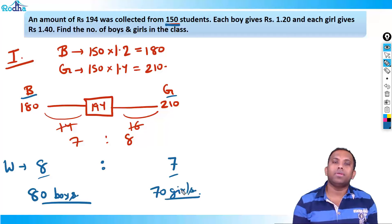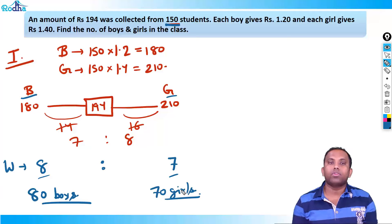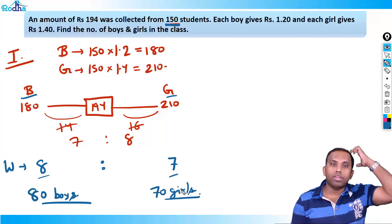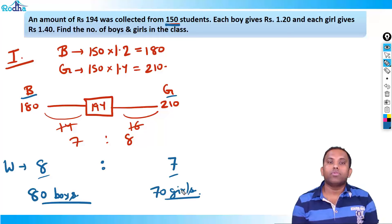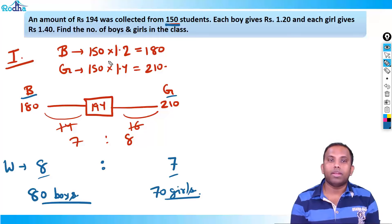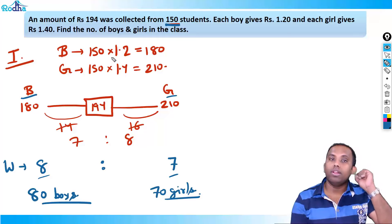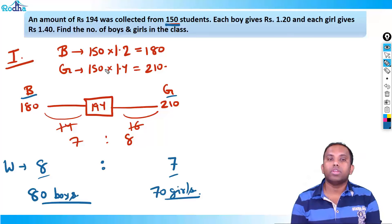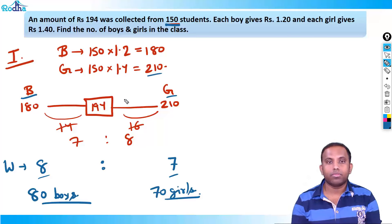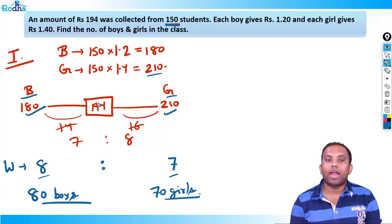That's the answer — a very easy and fast method. To recap: if all students were boys, collection = 150 × 1.2 = 180. If all were girls, collection = 150 × 1.4 = 210. The actual combined collection is 194.